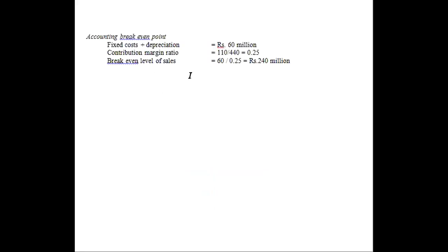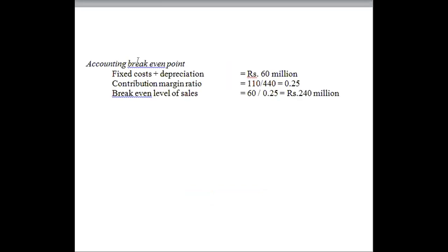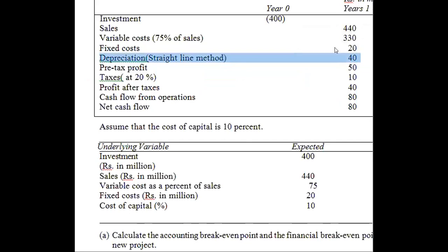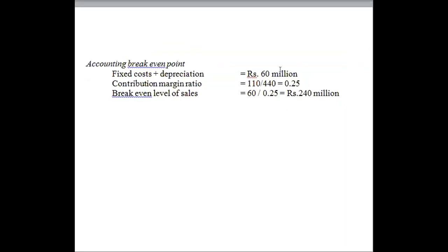Here is a solution I have already solved — let me take you through it. To calculate the accounting break-even point, the formula is: fixed cost plus depreciation, divided by contribution margin ratio. The numerator is fixed cost plus depreciation. The fixed cost given in the problem is 20 million and depreciation is 40 million, so 20 plus 40 equals 60 million.